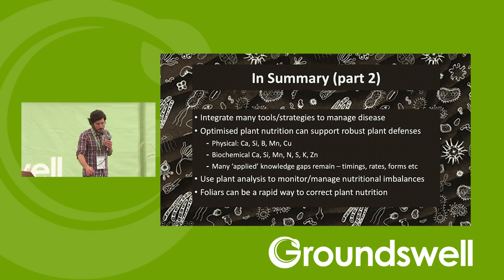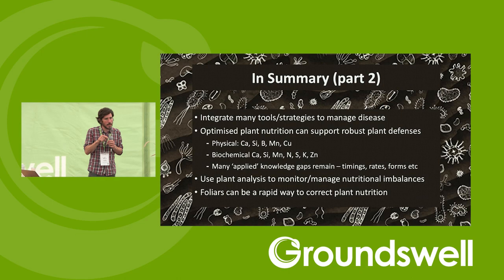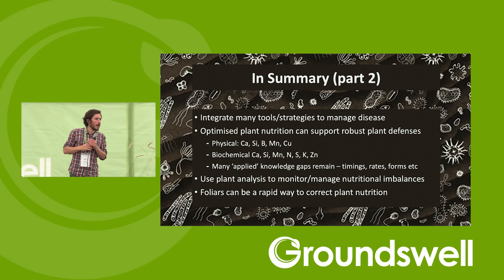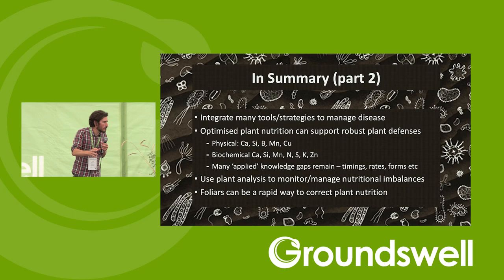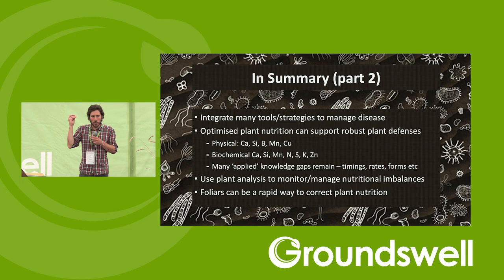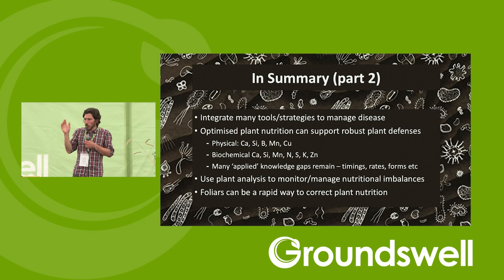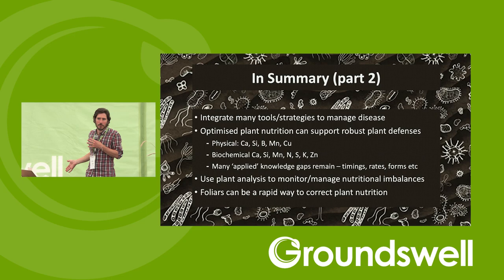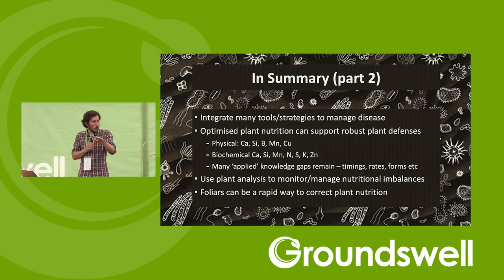In summary for part two: we must integrate many tools and strategies to manage pests and disease. Using nutrition, biology, and redesigning the farming system with diversity are all critically important as an integrated strategy so we don't have such dependency on pesticide inputs. We are all aware that overusing pesticides accelerates the development of resistance in pathogens and insect pests. This is exactly why we need to be having conversations about the potential contribution of nutrition, biology, and designing with diversity, even though those strategies are not perfect and will not give 100% control.